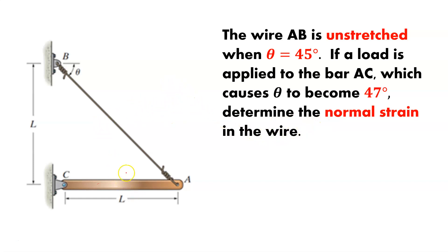We can look at this picture and get a few things right off the bat. Here we have point A, point C which is the bar, and the wire is AB. The ground between B and C has length L, and there's also a distance of L between A and C — so two legs are the same. We have a 45-degree angle theta here, so we can assume this is a right triangle with that 45-degree angle in the unloaded condition.